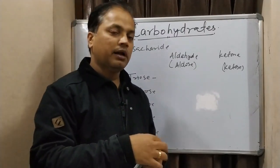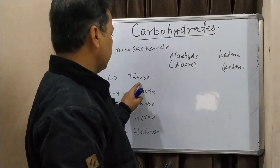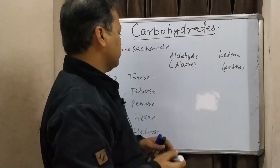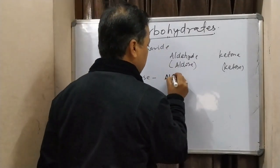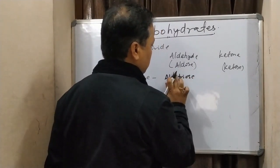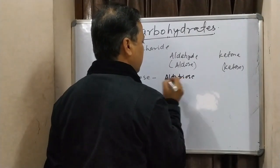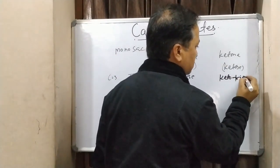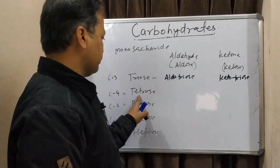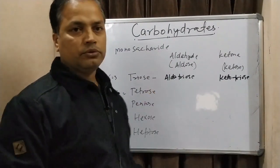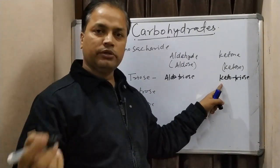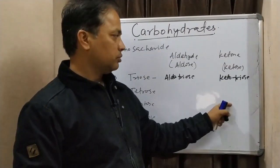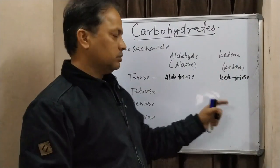Combining both classifications: a three-carbon sugar with an aldehyde functional group is called an aldotriose, and with a ketone group it is a ketotriose. Similarly, four carbons with aldehyde is aldotetrose, and ketone is ketotetrose. Then aldopentose, ketopentose, aldohexose, ketohexose, aldoheptose, and ketoheptose.